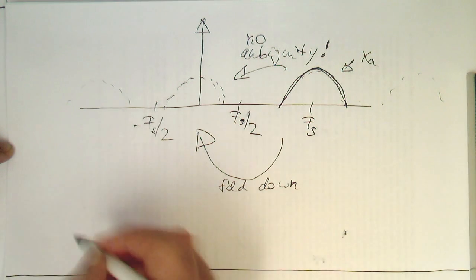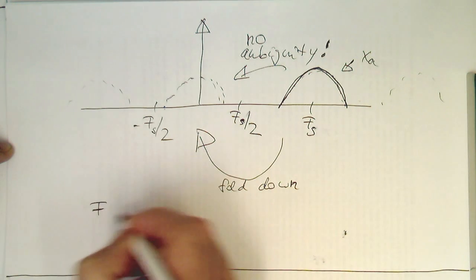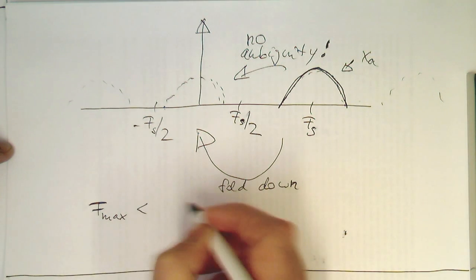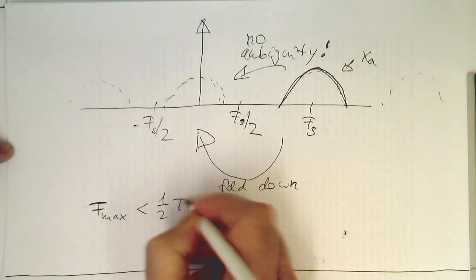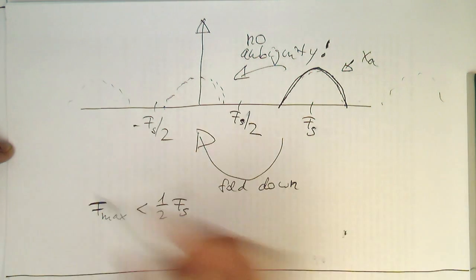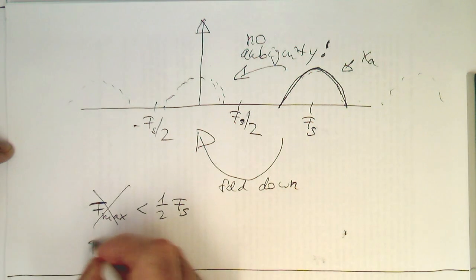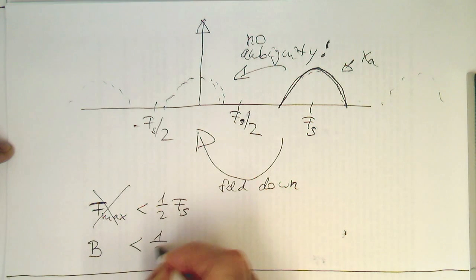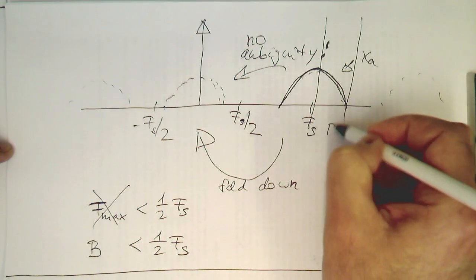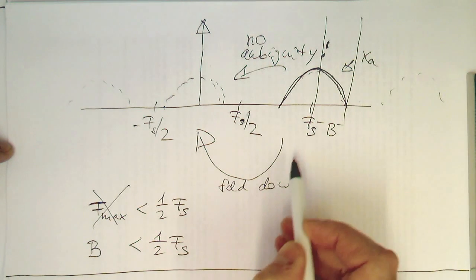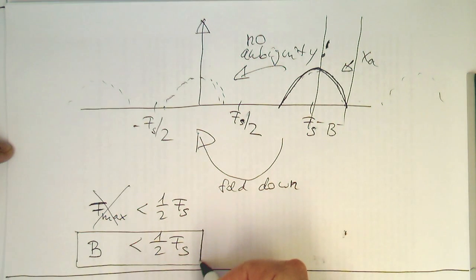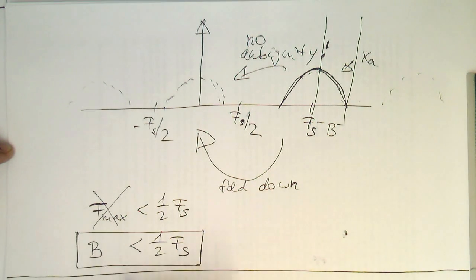So with that, we need to change our Nyquist theorem a bit. Before this, we had f_max had to be lower than half of the sampling rate. Obviously, in this case, this doesn't make sense, because f_max would mean here and not here. Therefore, the generalized case is that the bandwidth needs to be lower than Fs/2. This means the bandwidth of our signal is relevant, not the maximum frequency. This is a generalized formula to avoid ambiguity. But it creates fold down, though all the information can be recovered.